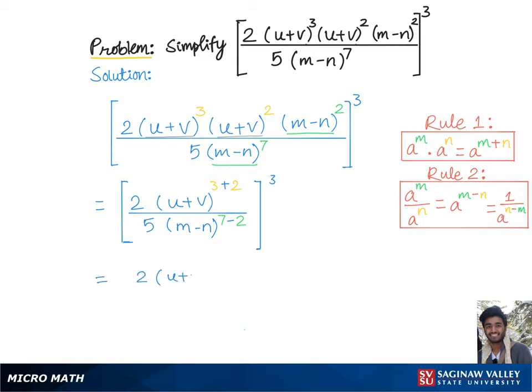This equals 2 times u plus v to the 5 divided by 5 times m minus n raised to the 5, and the whole group cubed. Now we'll further simplify this using rule 3.